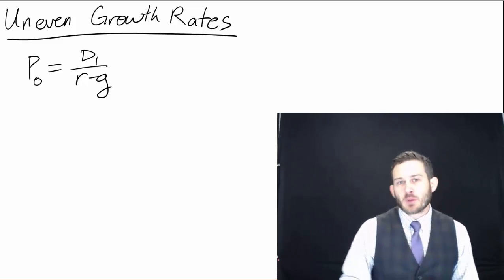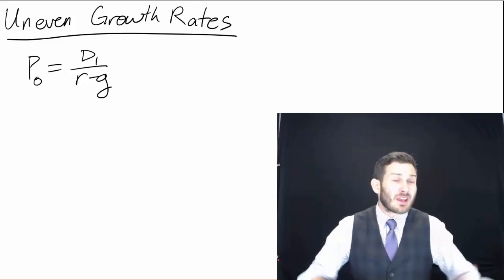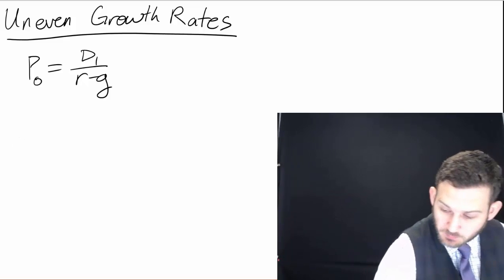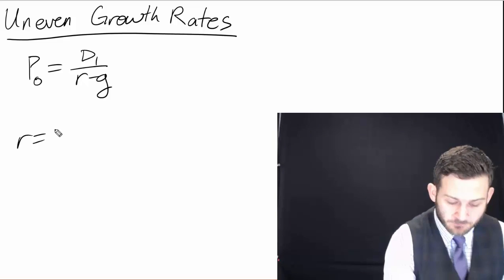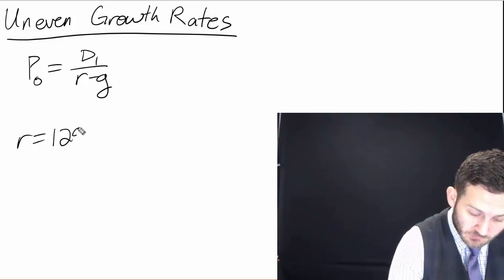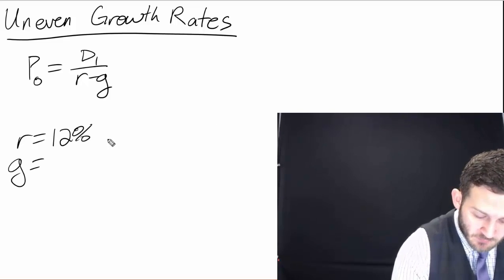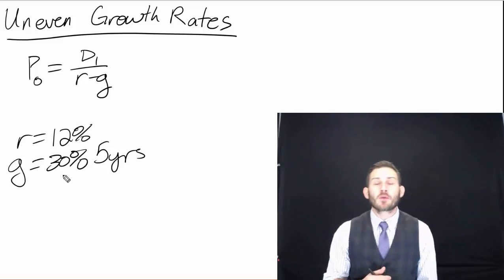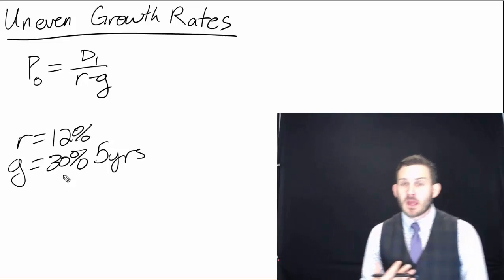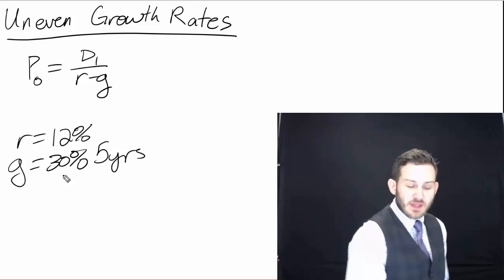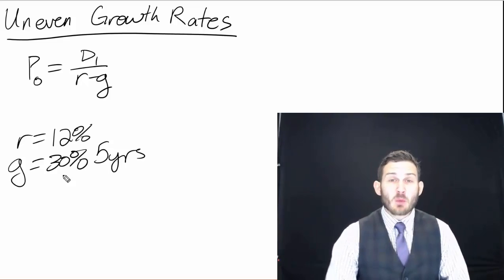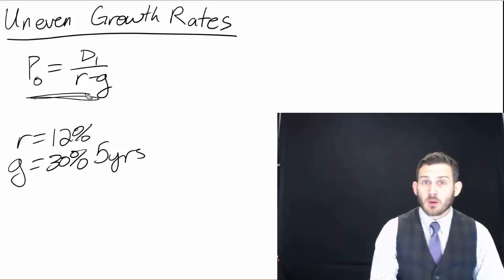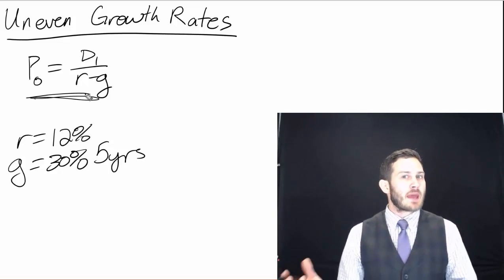However, we know that's not exactly the case with all companies. We might have some companies like tech companies or brand new startups that have explosive growth right off the bat. We could say that this company has a required return of 12% and a growth rate for the first five years at 30%. If we put this into the R minus G — 12% minus 30% — we end up with a negative number in our denominator when using the Gordon growth model, which would give us a negative price, which we can't have.